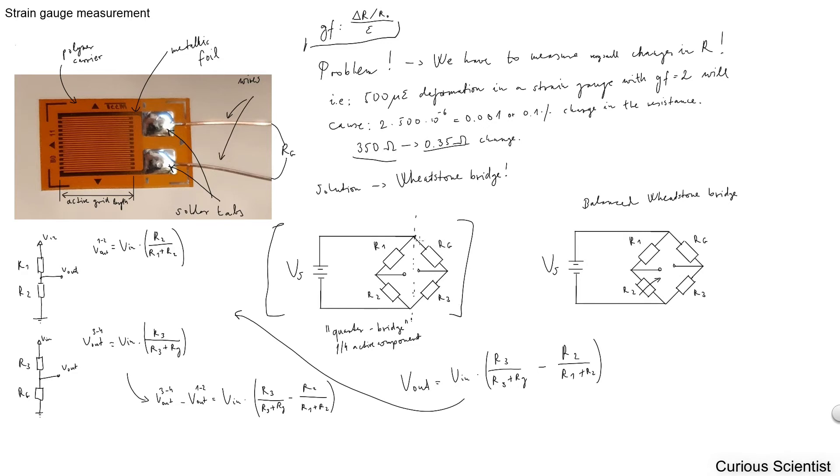I just wrote down the formula here, so you can measure the Vout, the voltage in the bridge. You see that it is V in times R3 divided by R3 plus RG minus R2 divided by R1 plus R2. But how do we get that?